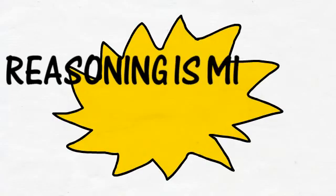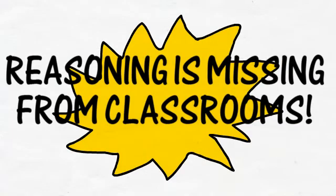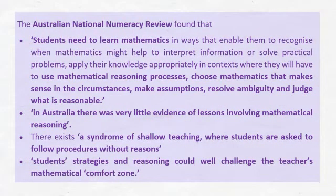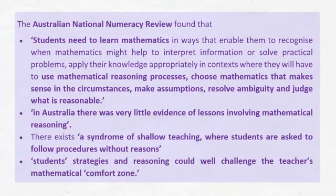Research consistently finds that reasoning is missing from classrooms. The Australian National Numeracy Review found that students need to learn mathematics where they will have to use mathematical reasoning processes, choose mathematics that makes sense in the circumstances, make assumptions, resolve ambiguity, and judge what is reasonable. They found that in Australia there is very little evidence of lessons involving mathematical reasoning, and that there exists a syndrome of shallow teaching where students are asked to follow procedures without reasons.